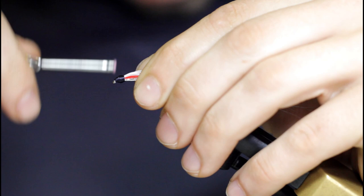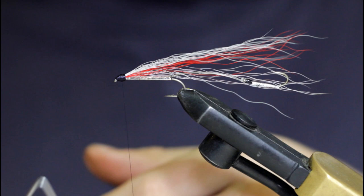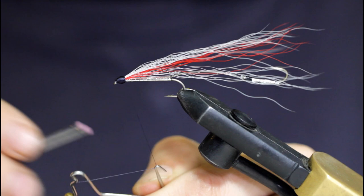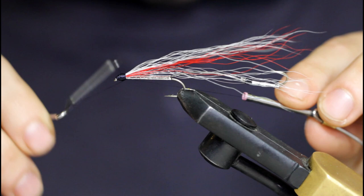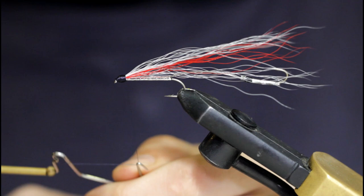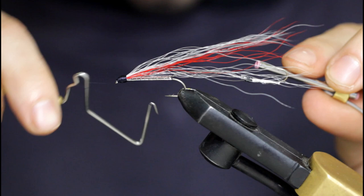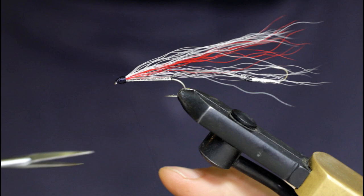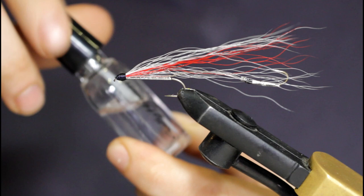Now keep in mind I have to paint eyes on, so that's why I'm building this head up to a specific size so that the eyes I paint on look okay. Once you're satisfied, go ahead and whip finish. I'm going to use the tool here so it looks fairly neat. Just trying to fill in any imperfections and uneven spots as I whip finish here. And that looks good. Snip off the thread.